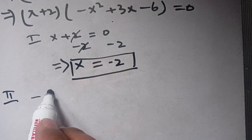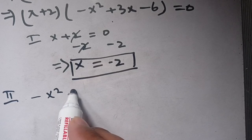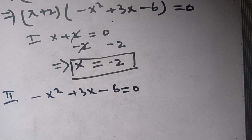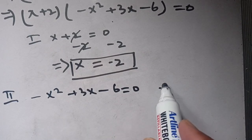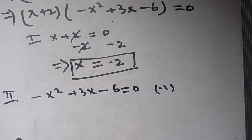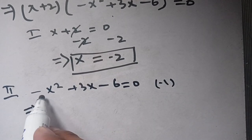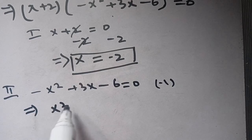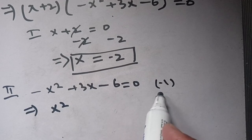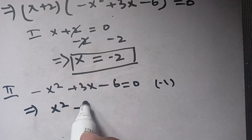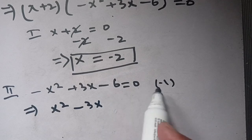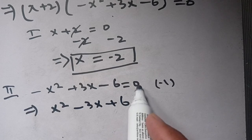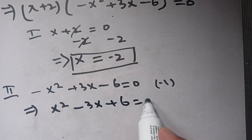Now we solve minus x squared plus 3x minus 6 equals 0. We divide both sides by minus 1, which gives positive x squared, and 3x divided by minus 1 becomes minus 3x, and minus 6 divided by minus 1 becomes plus 6, equal to 0 divided by minus 1 which is 0. So we have x squared minus 3x plus 6 equals 0.